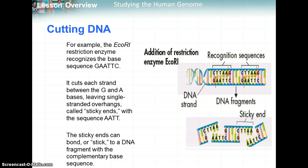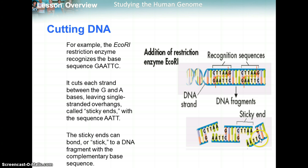One commonly used restriction enzyme is EcoRI, and it recognizes the distinct base sequence GAATTC. When you have those bases together, the EcoRI restriction enzyme will cut in between the G and the A, leaving single-stranded overhangs called sticky ends with the AATT sequence. So here we had a GAATTC, and EcoRI was able to cut the fragment. Same idea here — GAATTC, it cut the fragment. So here's a sticky end AATT, and here's another sticky end AATT on the other side. The sticky ends can now bond or stick to a DNA fragment with the complementary base sequence.